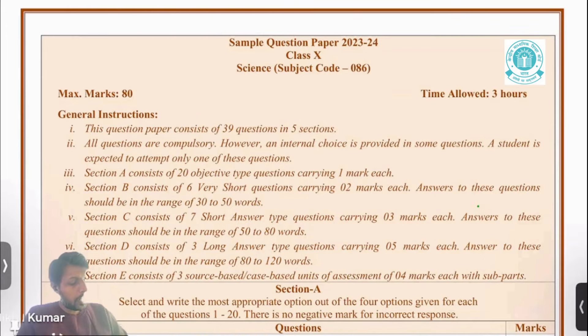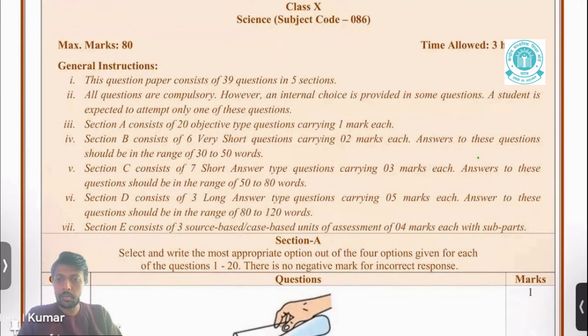Before we get started, let's quickly look at the pattern of the question paper that you are going to get in your board exams. The paper is going to have 5 sections in total. In section A, you get 20 objective questions and every question has 1 mark. In section B, you have 6 very short questions, each carrying 2 marks. Section C has 7 questions of 3 marks each. Section D has 3 long answer type questions, 5 marks each.